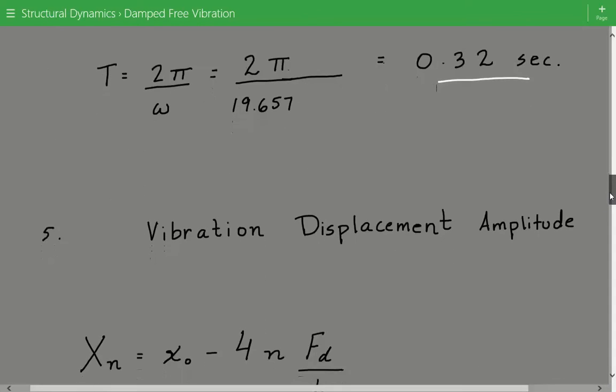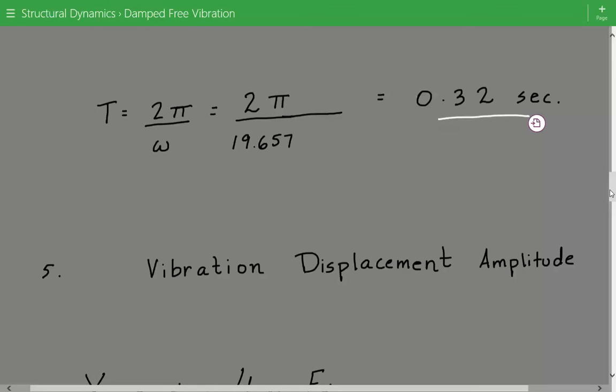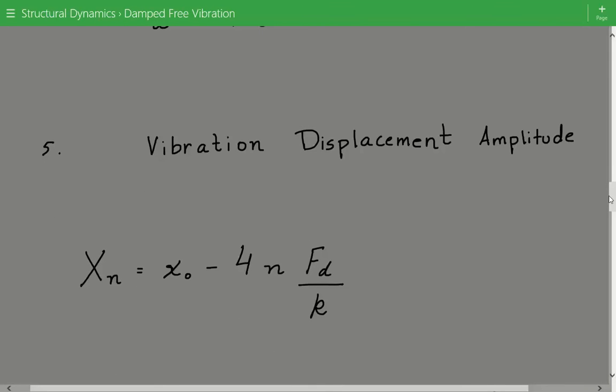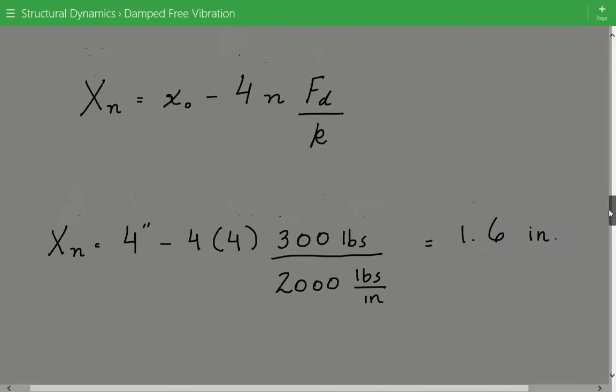Now we can calculate the vibration displacement amplitude after 4 cycles. So the relationship we're going to use is that this vibration amplitude is equal to the initial displacement minus 4 times the number of cycles multiplied by the Coulomb friction force divided by the spring stiffness. So we just plug in the numbers: the initial displacement is equal to 4 inches minus 4 times n the number of cycles, so we're interested in 4 cycles, times the Coulomb friction force of 300 pounds divided by the spring stiffness k of 2,000 pounds per inch. So the vibration displacement amplitude after 4 cycles is equal to 1.6 inches.